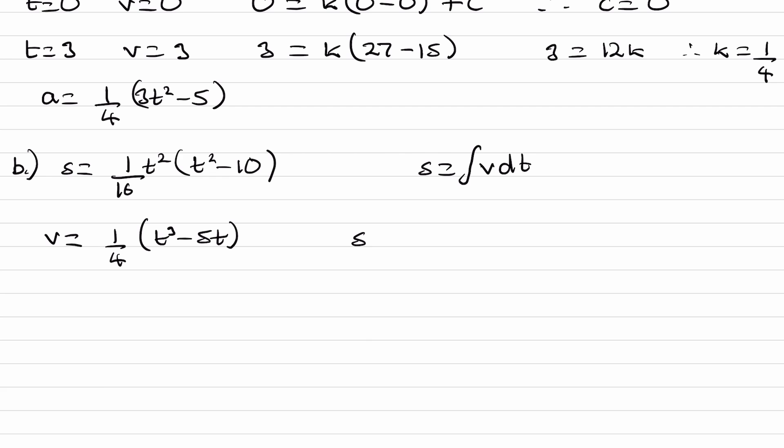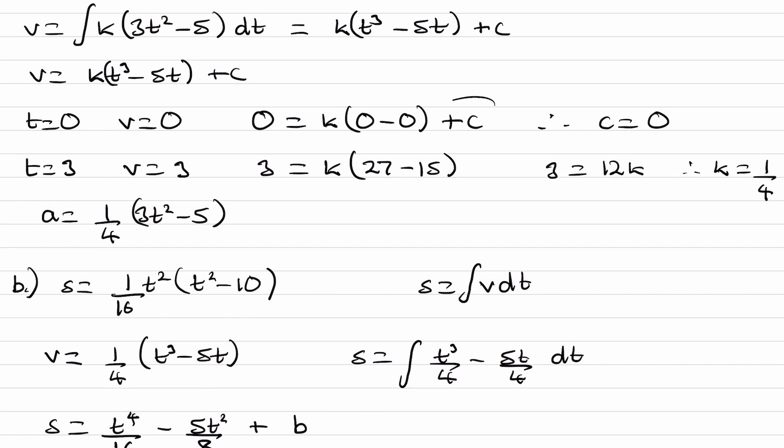So that's our velocity equation. And then we can work out displacement. So displacement is the integral of, I'll multiply this out, t cubed over 4 minus 5t over 4. So this then becomes t to the 4 divided by 4 again, so 16, minus 5t squared divided by 2. So this becomes divided by 8. And we have a new integration constant. I'll call that plus d. Maybe not d, just so it's not confused with distance. Let's call it, I don't know, b. I don't want to use c again because we've already used c back here.